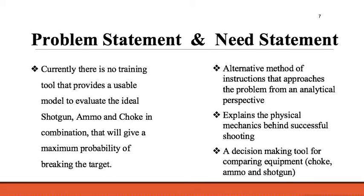The problem is that there's no tool out there that provides a usable model for evaluating what shotgun ammo and choke to use in trap shooting that will give you the biggest radius with the most probability of breaking your clay. We need an alternative method of instruction that approaches the problem from an analytical perspective. Most trap shooters will just tell you what they use, making it very hard to determine what exactly to use. We need to explain the physical mechanics behind successful shooting in order to produce a decision-making tool for comparing equipment.